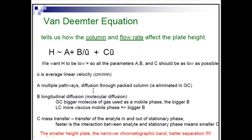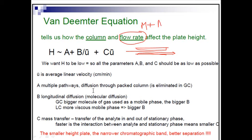Suppose we have a column, because we need a column to run chromatography. The column contains a stationary phase which resides inside it, and we also have a mobile phase which carries analyte molecules from one place to another. The analyte molecules can interact with both the mobile phase and the stationary phase, and as the flow rate changes, it changes the plate height.